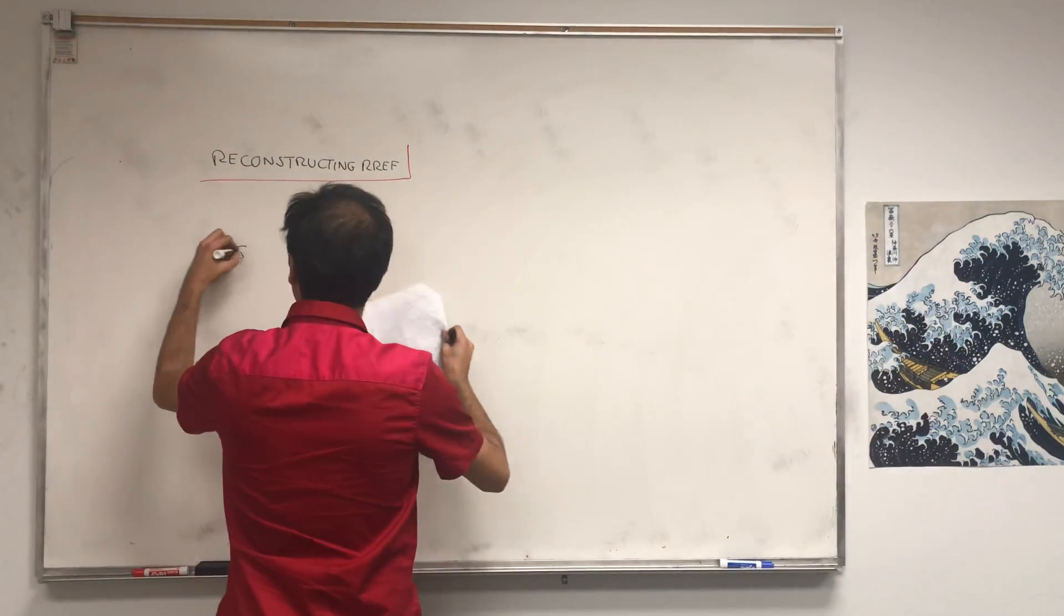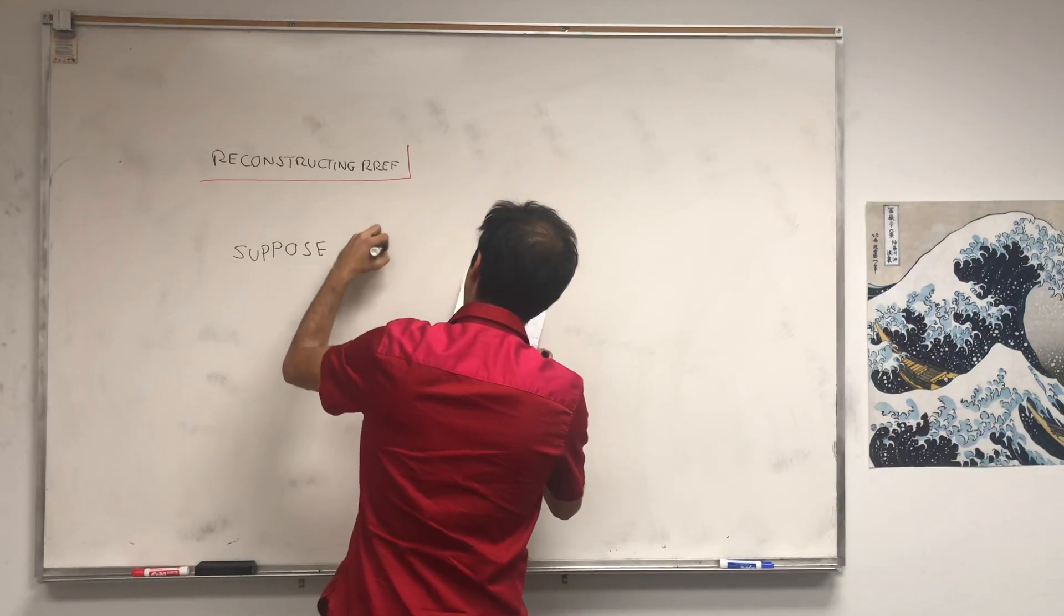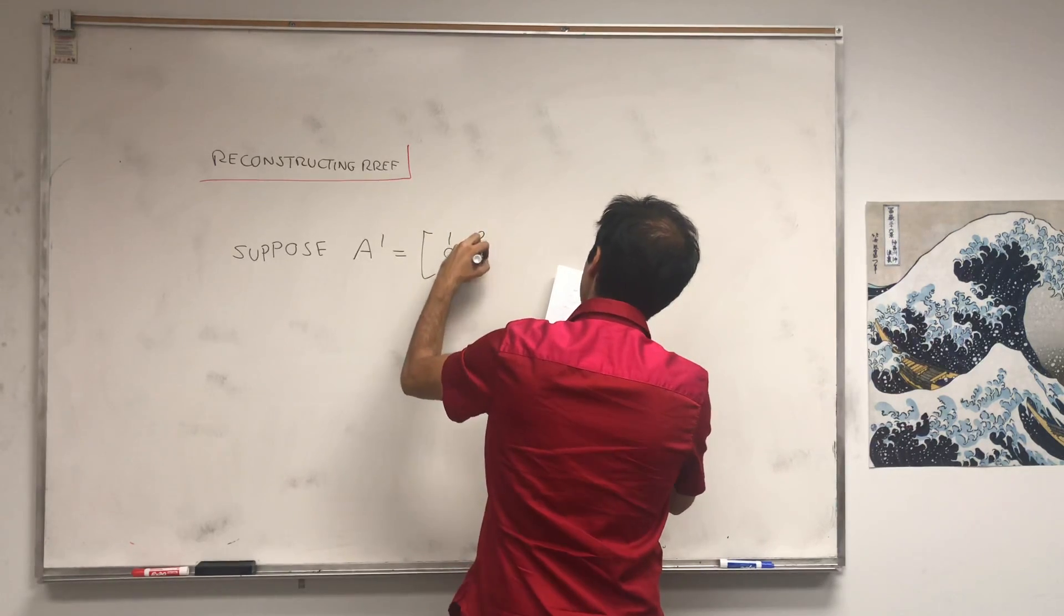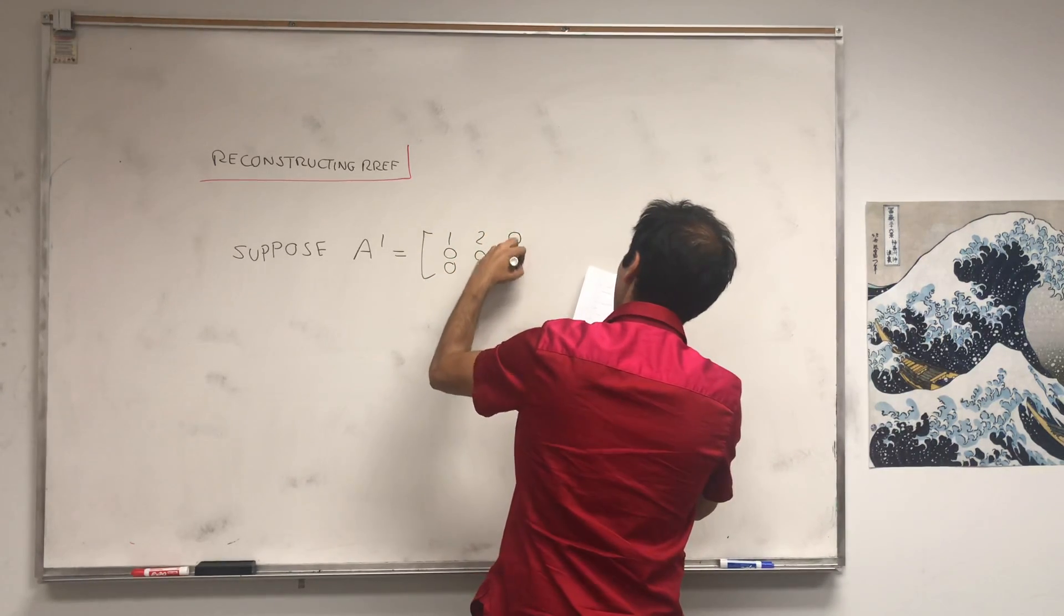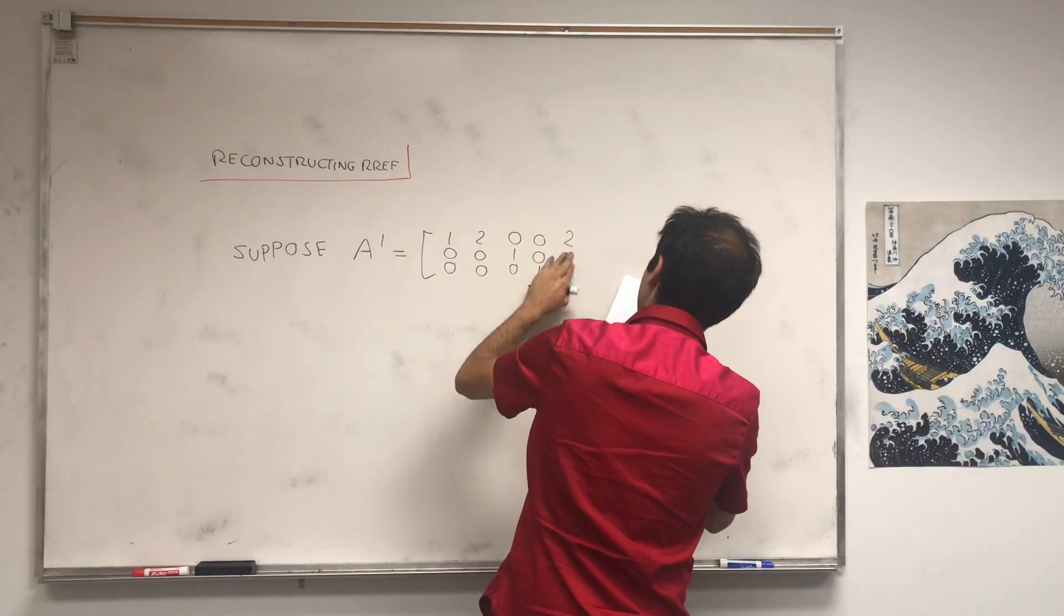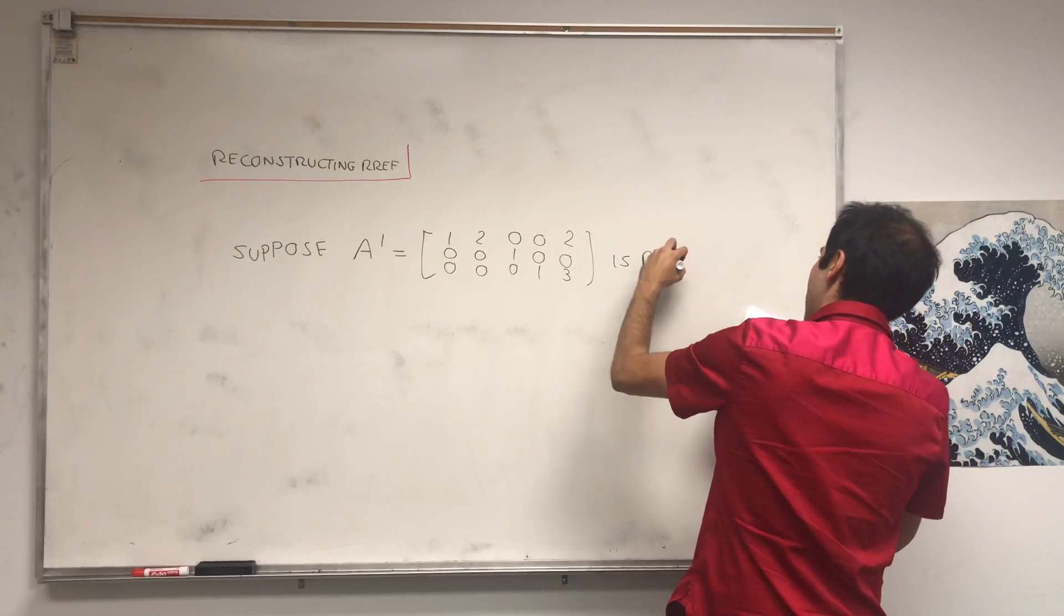So suppose you have the following matrix, A prime, which is [1, 0, 0, 2, 0, 0; 0, 1, 2, 0, 3] is the row reduced echelon form of A.